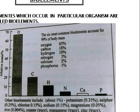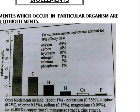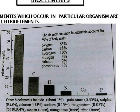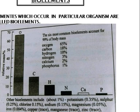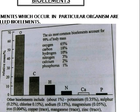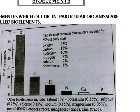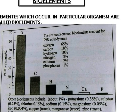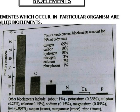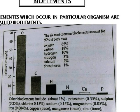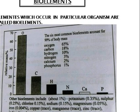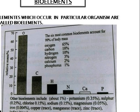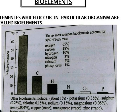Bioelements are of two types. Number one: major bioelements, which are required in higher amounts. Examples include oxygen at 65%, carbon at 18%, hydrogen at 10%, nitrogen at 3%, calcium at 2%, and phosphorus at 1%.